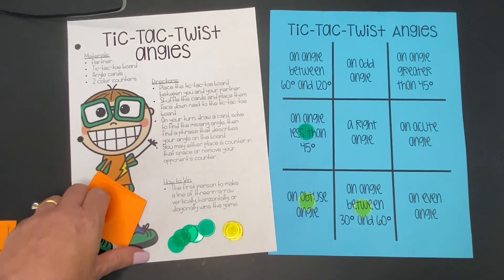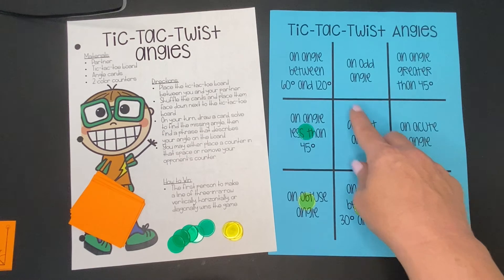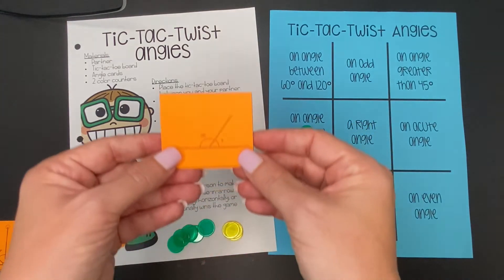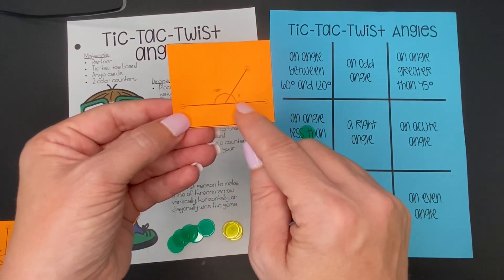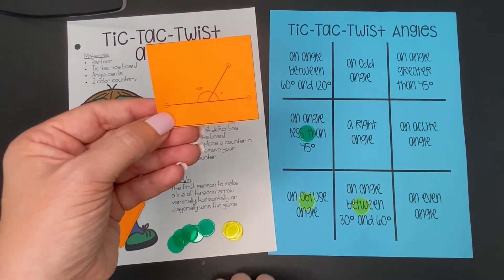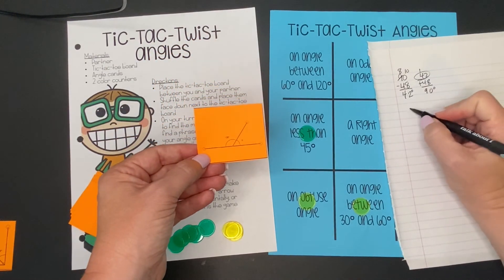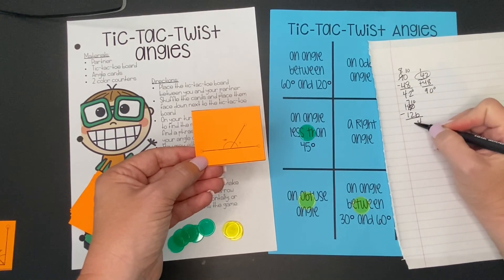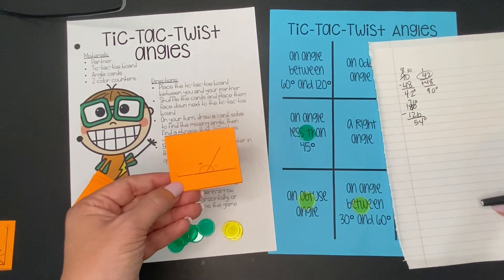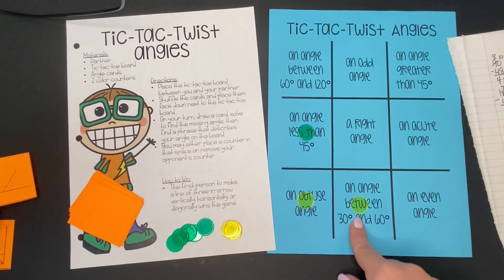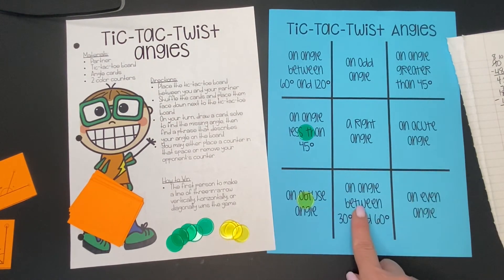Now it's my partner's turn. Each time we go, we have a choice: we can either fill a square that's open, or we could remove our opponent's counter — we can't place our own there, but if our answer description matches that square, we could remove our opponent's one. Here we have a supplementary angle — they add up to 180 degrees. I have 126 but I'm missing one angle. So I would do 180 minus 126. I'm going to need scrap paper for this — borrow — 54 degrees, that's what's missing. So our opponent, since they have 54 degrees, could play a little defense and say, 'I'm going to remove a yellow.' They can't put their green one there, but they could remove ours.